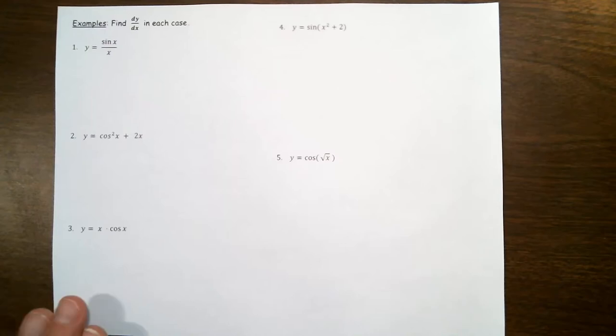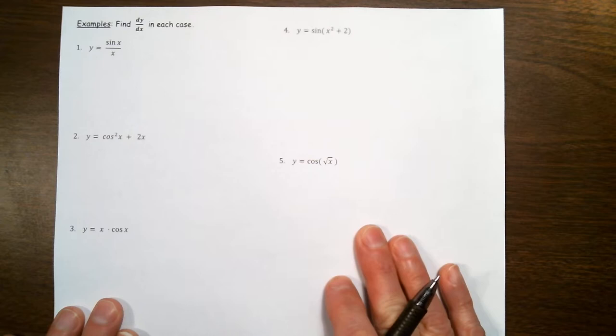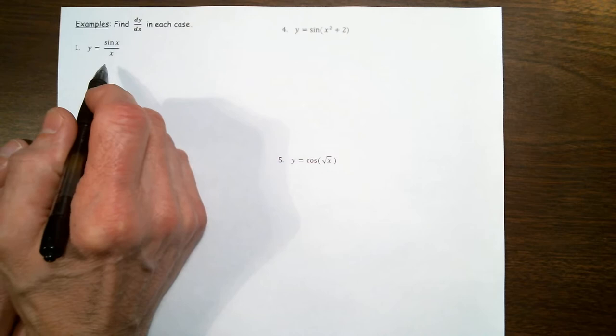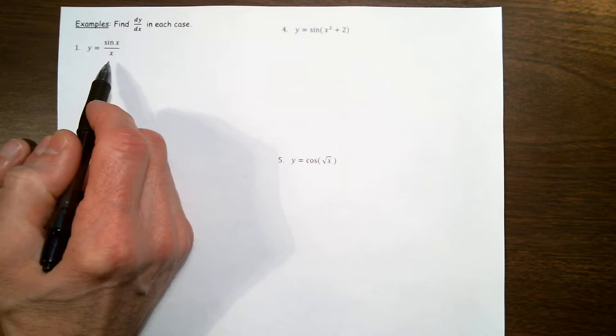Last time we derived the derivative formulas for the sine and the cosine function. Today we'd like to practice using them in some derivative exercises. In each case we want to find dy/dx. In the first instance, y is the quotient of sine of x over x, so to differentiate y we apply the quotient rule.